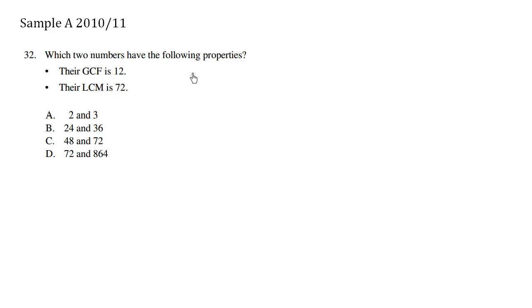Which two numbers have the following properties? The GCF, greatest common factor, is 12, their LCM, lowest common multiple, is 72, and we have some choices here.